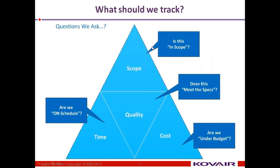With that we will move into the concept of what should we track. When a project is running, what are the basic questions that we should ask? As per the triple constraints as defined by PMI — the Project Management Institute, or PMBOK — what we should track for successful completion of projects are scope, time, quality, and cost.